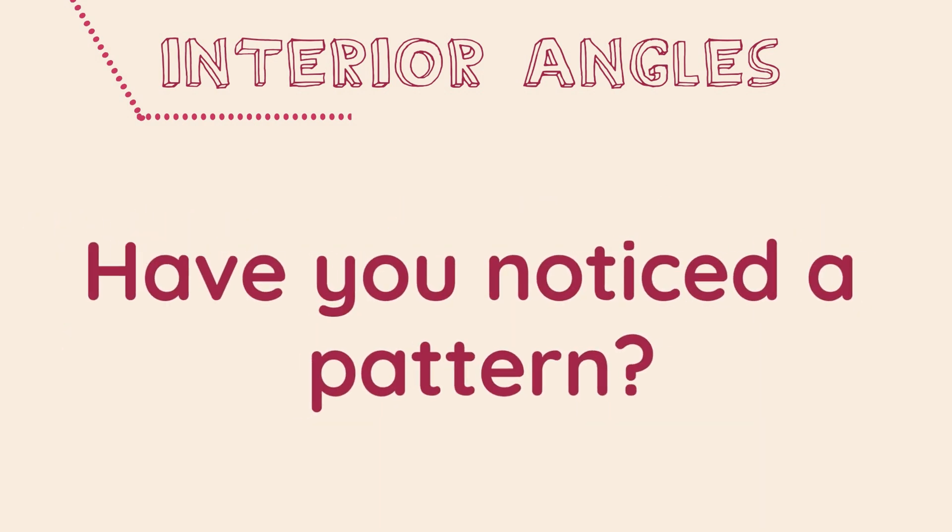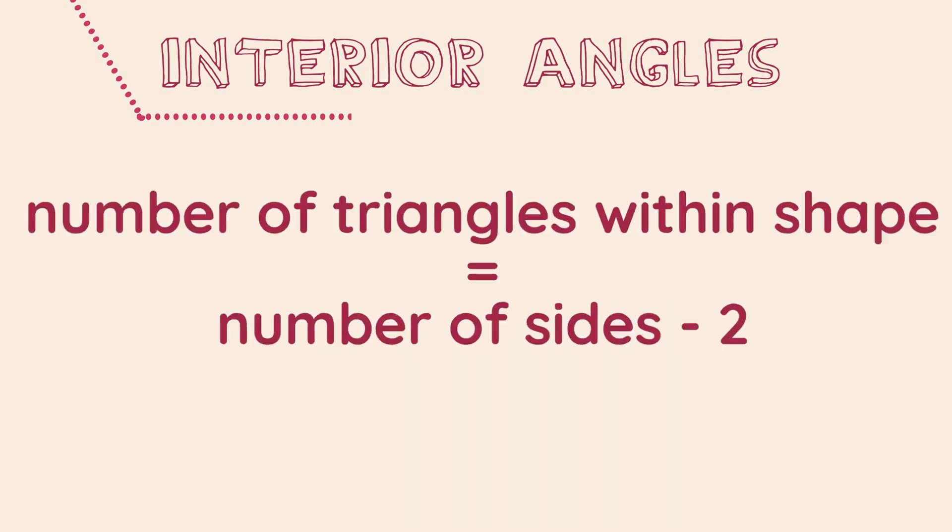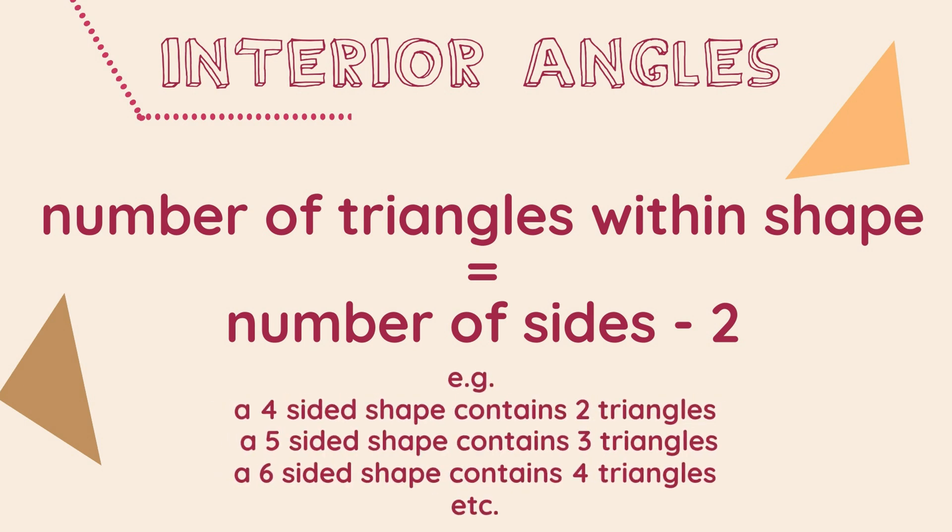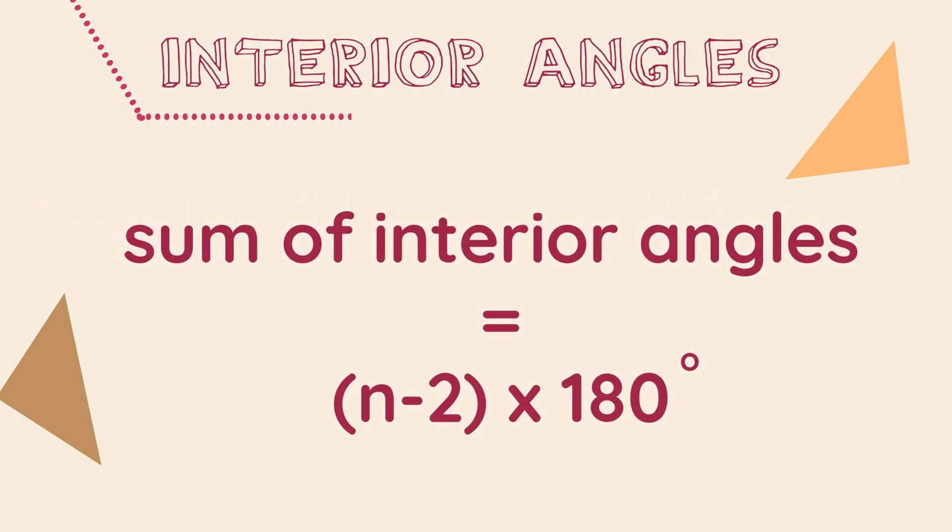Have you noticed a pattern here? Well, the number of triangles which can perfectly fit inside any polygon will always be equal to two less than the number of sides of that polygon. This allows us to create a formula which we can use to calculate the sum of the interior angles for any polygon. The sum of the interior angles equals n minus two times 180 degrees, where n is the number of sides.